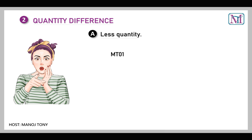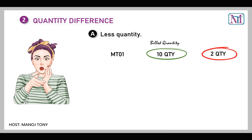Here we'll use material code MT01. In the invoice, the actual billed quantity is 10. But when the customer received the goods, out of 10 quantities, the customer got 2 quantities as totally damaged. If 2 quantities are totally damaged, we will not take those 2 quantities back to our plant. So the correction quantity would be 2.